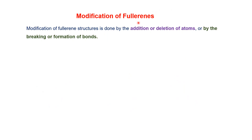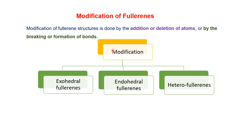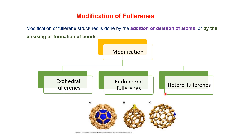Modification of philorenes: Modification of the philorene structure is done by the addition or depletion of atoms in the philorene structure, or by the breaking or formation of bonds. Modification of philorene results in three major structures: exohedral philorene, endohedral philorene, and hetero philorene.